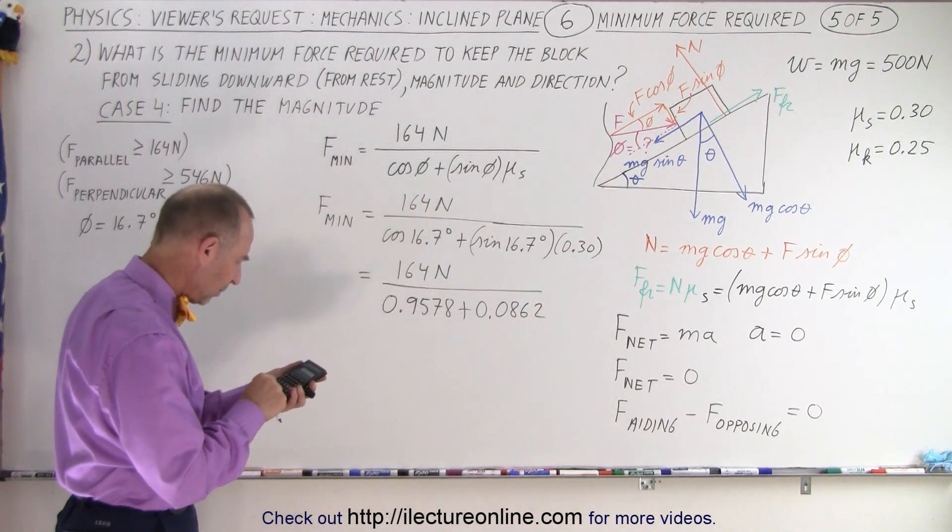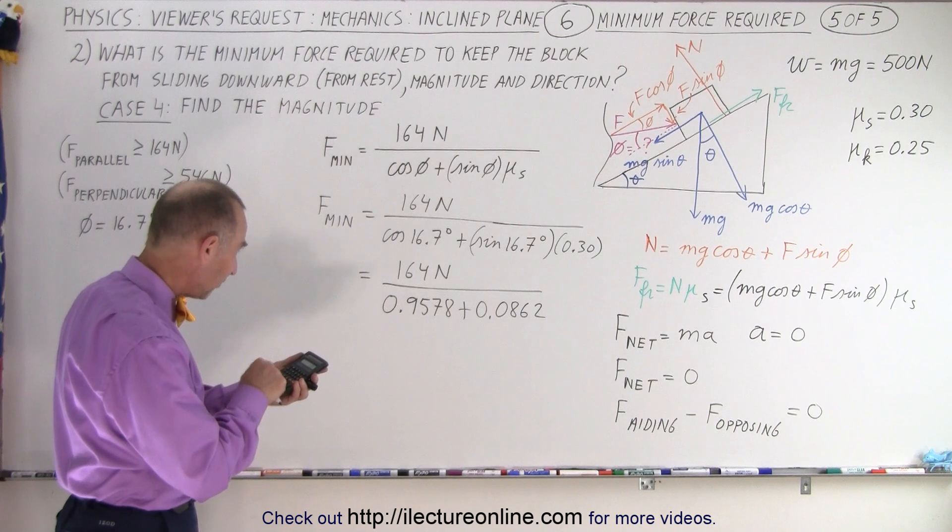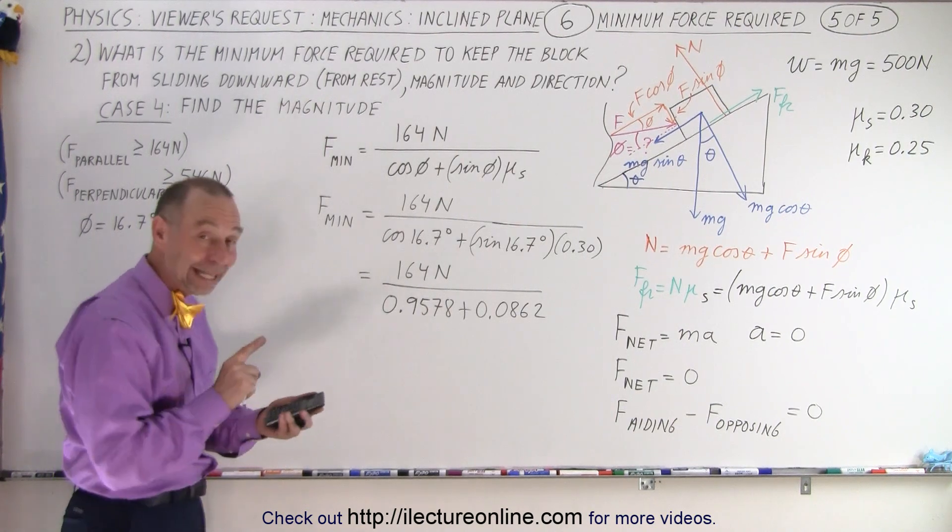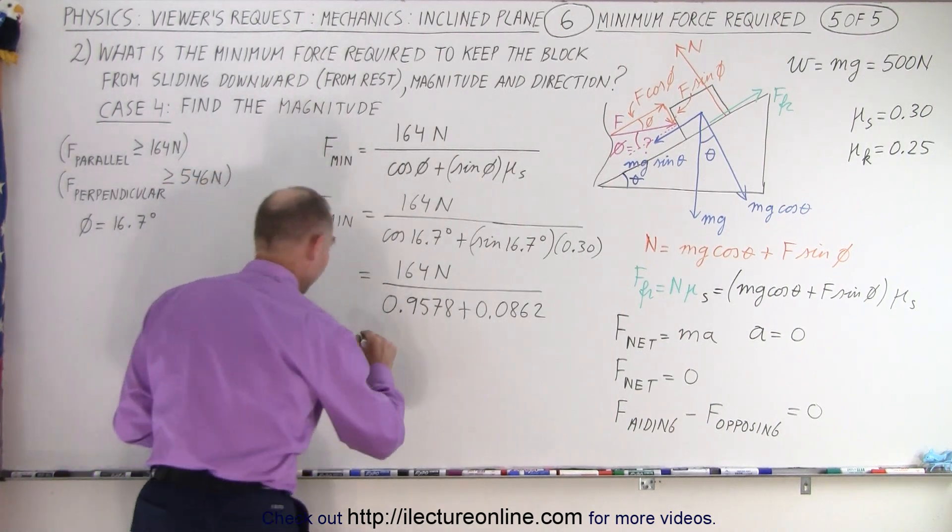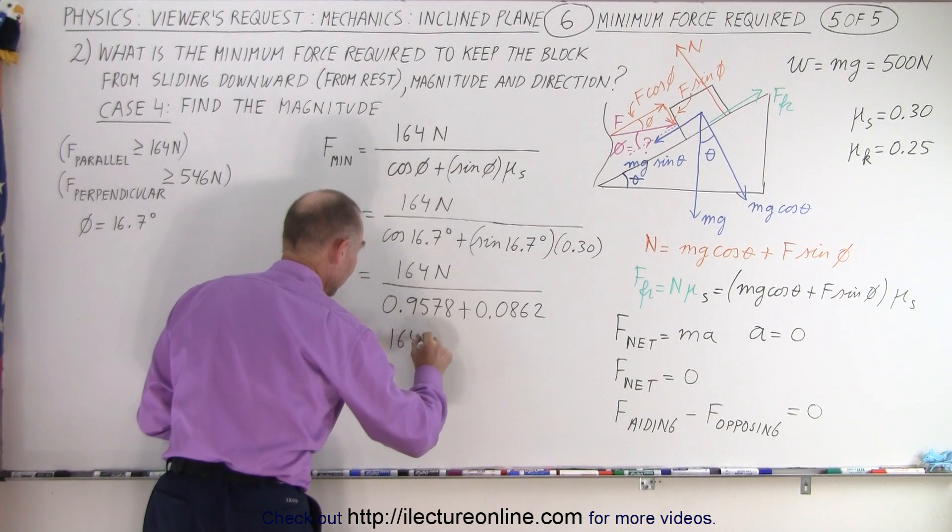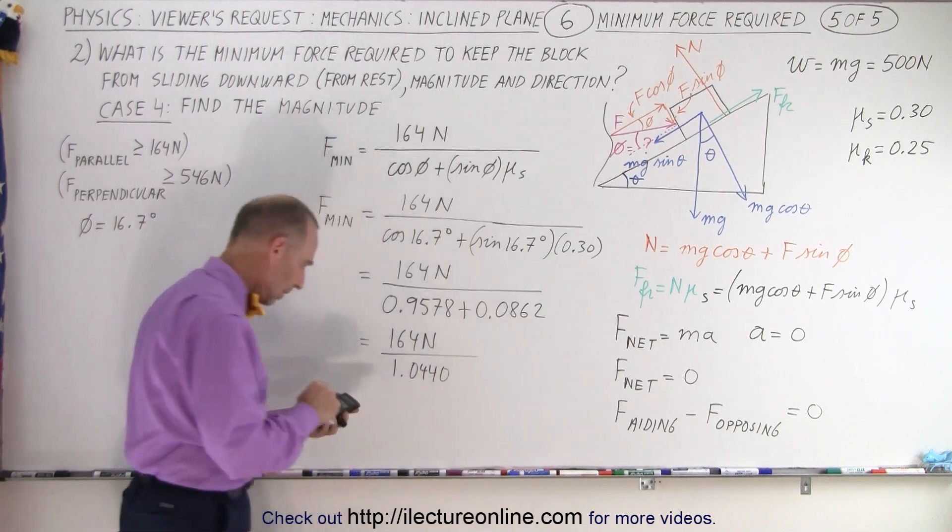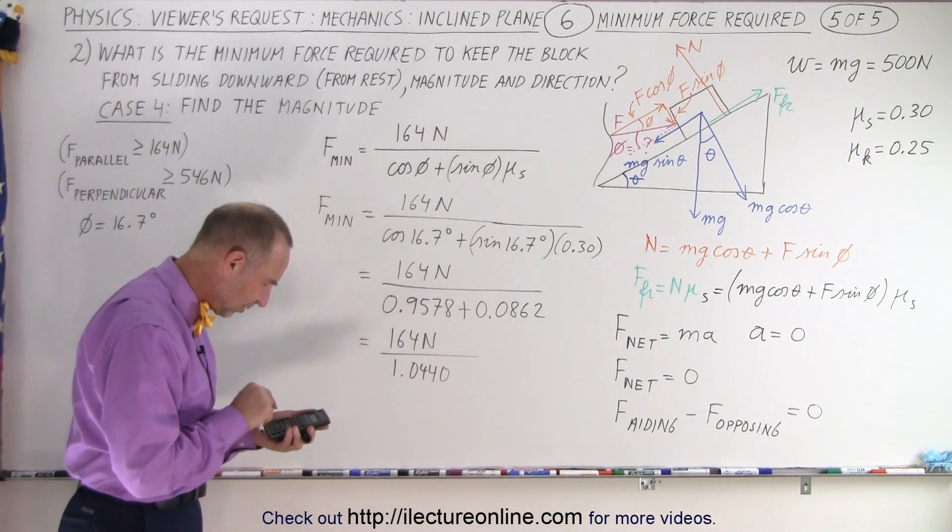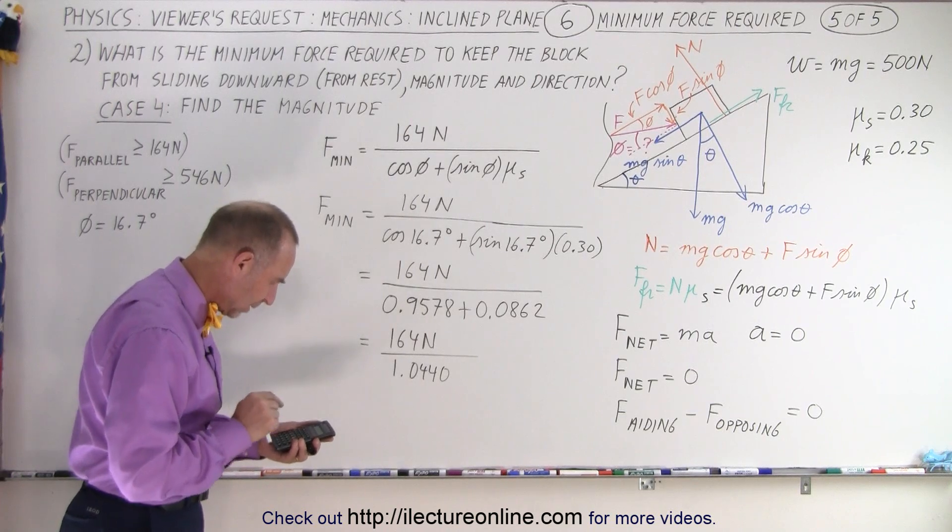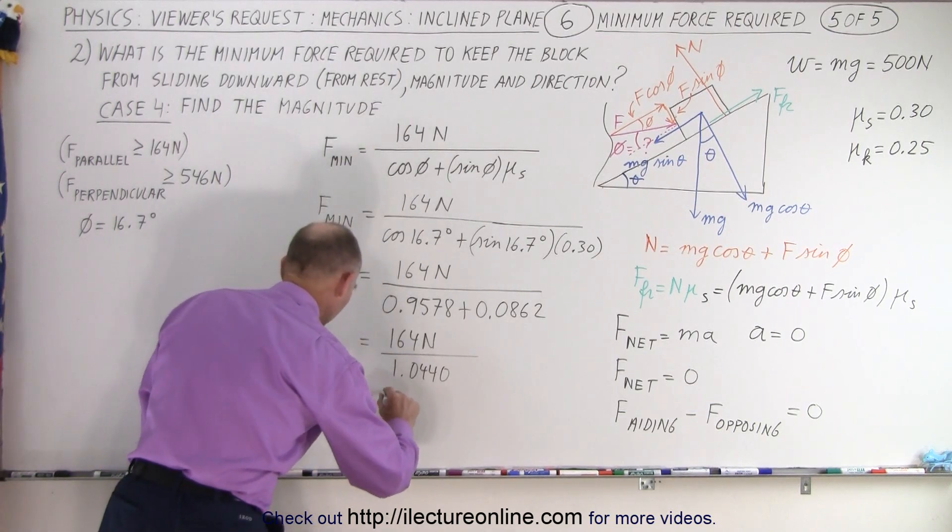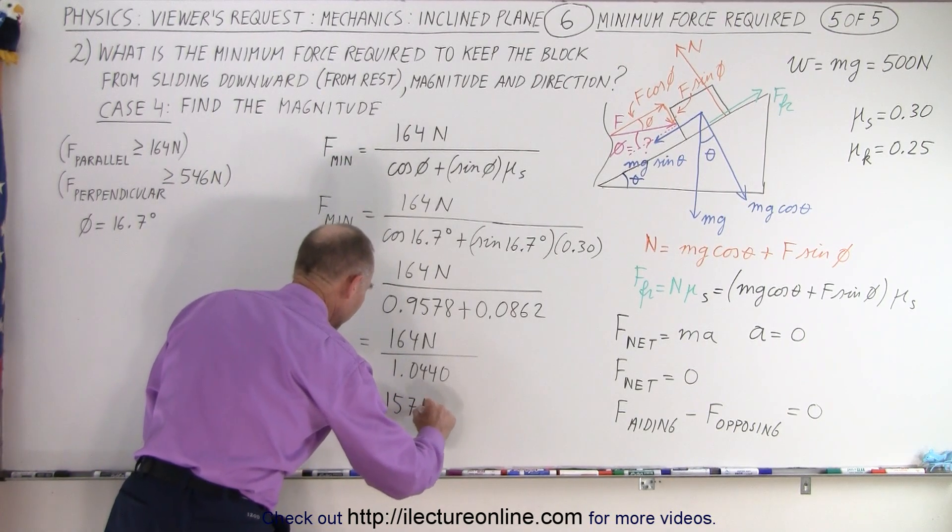And if we add those two together, plus 0.9578, indeed we get a number bigger than 1. So this is equal to 164 newtons divided by 1.0440. Then if we take the inverse of that, times 164, we get that's equal to 157 newtons.